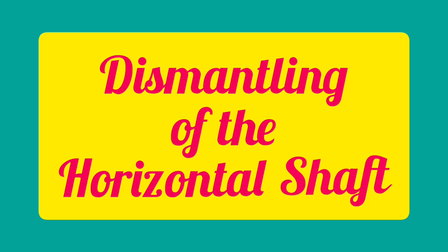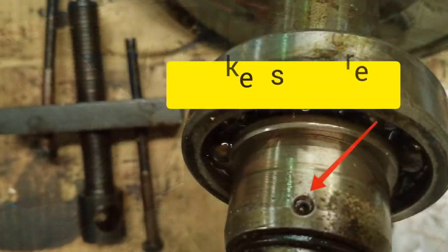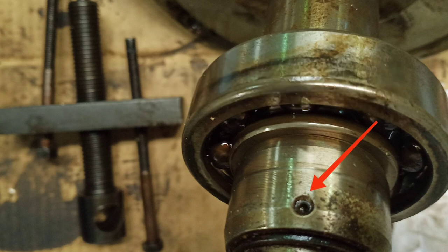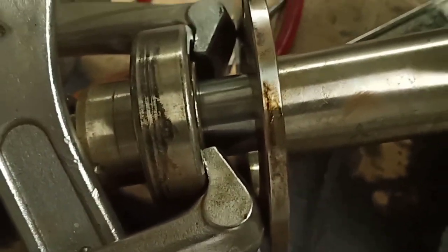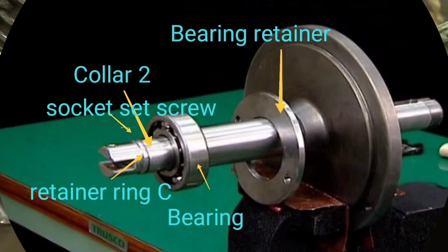Dismantling of the horizontal shaft. Remove the retainer ring C. Loosen the socket set screw securing Collar 2. Remove the pump side bearing together with the Collar 2 using jack bolts, push bolts, and handle or a puller. Then remove also the bearing retainer.